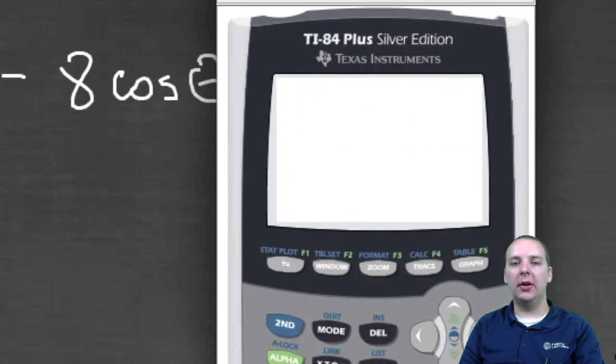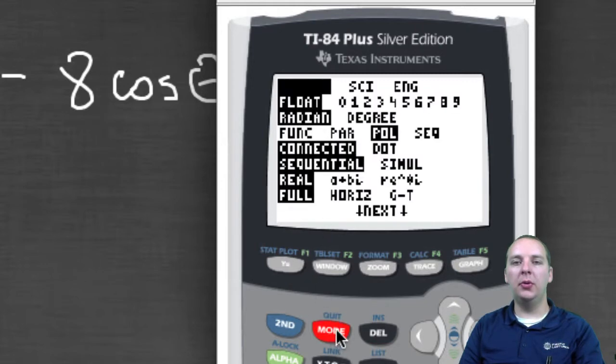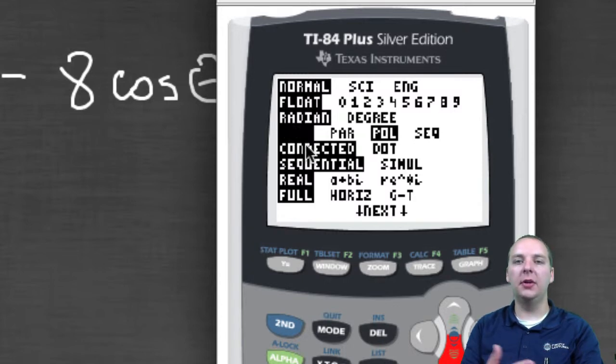So here's our calculator, we'll clear that out. So if you go to mode, actually I've already got mine in polar mode. I was doing something earlier with polar mode. Right now yours is most likely in function mode. Yours probably says FUNC function mode. And you'll just slide this past parametric mode into polar mode and push enter.